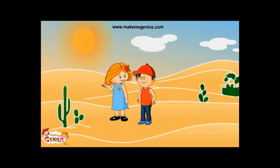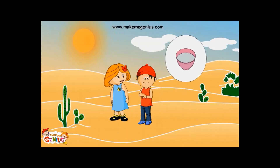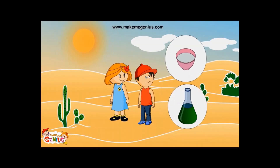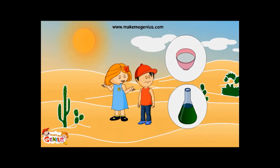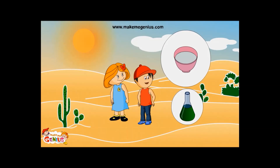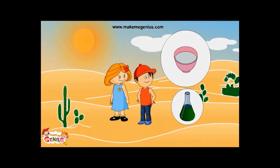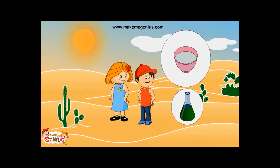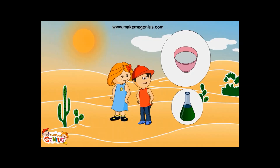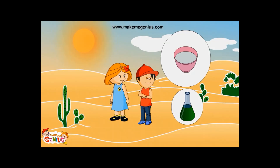Before I answer this, let me ask you a question. If we keep water in these two containers in sunlight, from which container will water evaporate faster? Water will evaporate faster from the bowl. Because the bowl has more surface area, therefore more sunlight can directly fall on the water, so more water will evaporate.